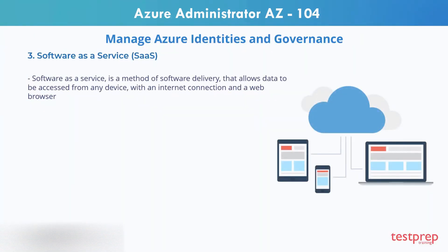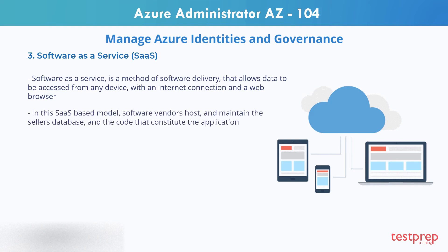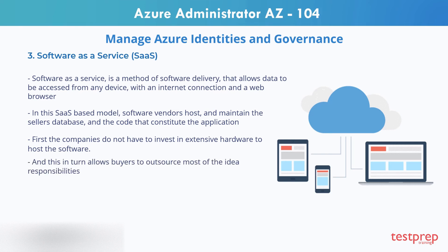Software as a Service is a method of software delivery that allows data to be accessed from any device with an internet connection and a web browser. In this SaaS-based model, software vendors host and maintain the database and the code that constitutes the application. Companies do not have to invest in extensive hardware to host the software, which allows buyers to outsource most IT responsibilities. A major benefit of SaaS is being able to spread out costs over time. Examples include Office 365, Salesforce, Facebook, and Gmail — because you do not have to install anything; all you need is a browser and a login provided by the SaaS provider.